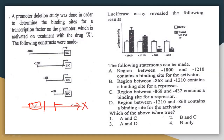A promoter deletion assay was performed to determine the binding site for a transcription factor on the promoter, which is activated on treatment with drug X. Drug X actually enhances the expression level. Different constructs are given with their luciferase activity. The black color represents treatment with drug, and the other bars are control.